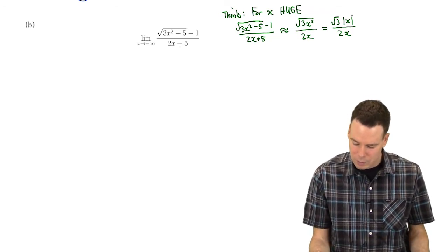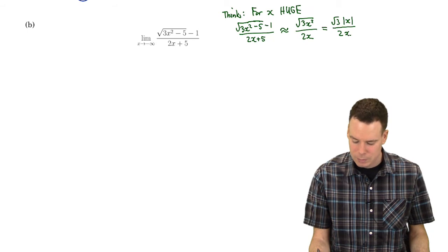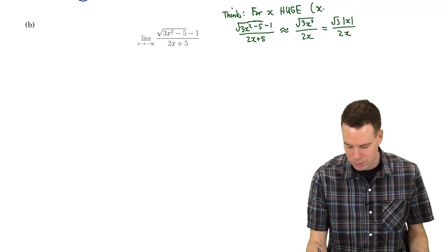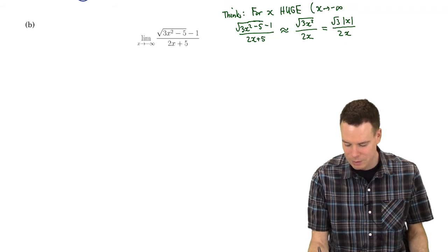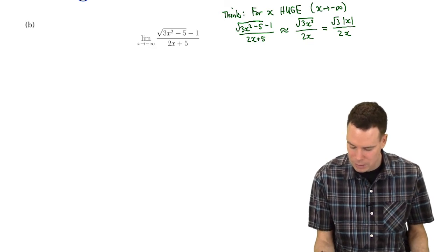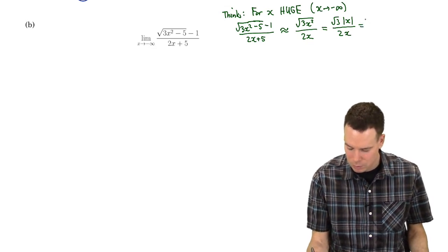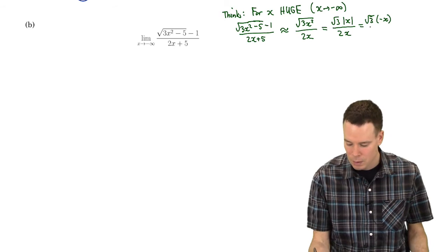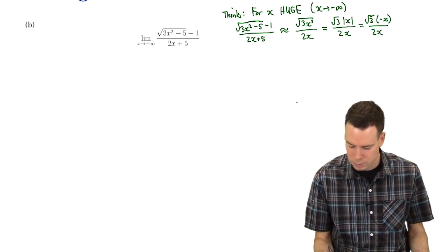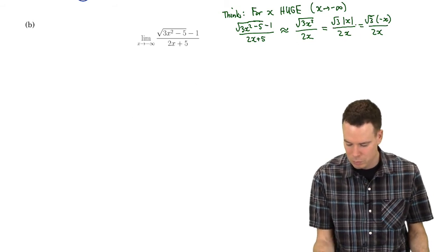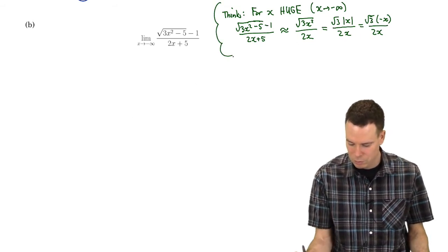Okay so now I've got an absolute value of x divided by x and now I'm thinking x is huge. I really want to think x is heading towards negative infinity so x is a negative number. If x is a negative number what is the absolute value of x? Well the absolute value of x is really just the same thing as negative x.